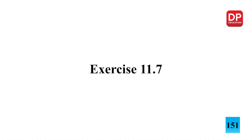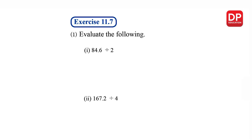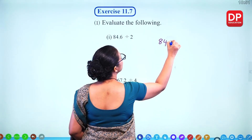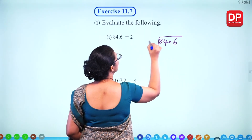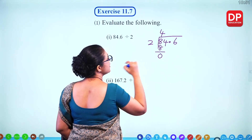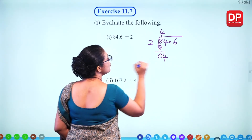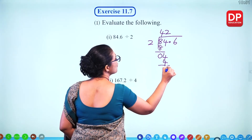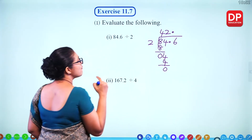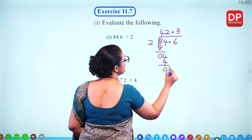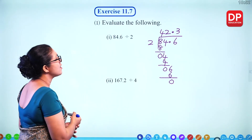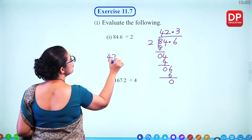Exercise 11.7: evaluate the following using long division. For 84.6 divided by 2: 2 times 4 is 8 (0 remaining), 2 times 2 is 4 (0 remaining). Put the decimal point. For 6, 2 times 3 is 6 (0 remaining). Answer is 42.3.